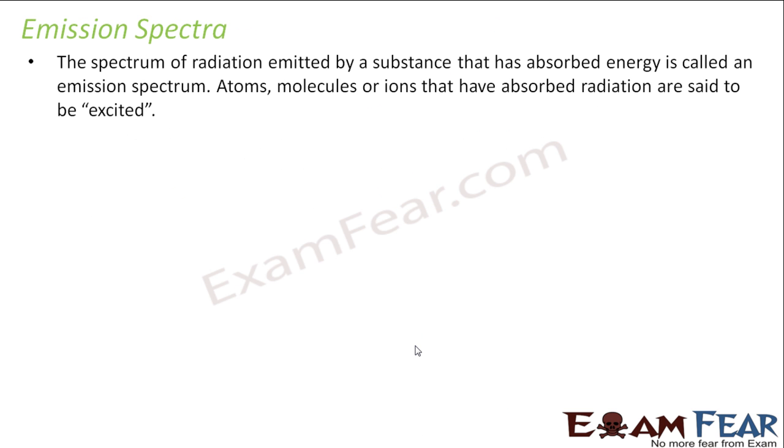So, we talk about emission spectrum. The spectrum of radiation emitted by a substance that absorbs energy is called emission spectrum. I will tell you, for example, this is my electron. I am just following the Bohr model because Bohr model is more visual, you can understand things, but at the same time, Bohr model is not correct.